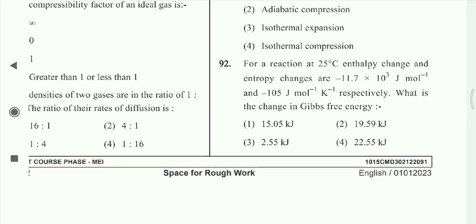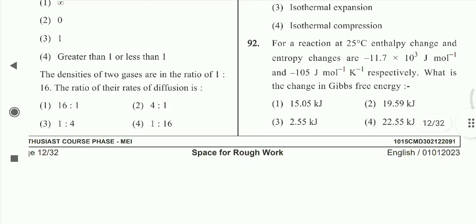Question 92: For a reaction at 92°C, the enthalpy change and entropy change are -11 kJ/mol and 11.7 × 10⁻³ kJ/mol/K respectively. The Gibbs free energy change is 19.59 kJ. Option 2nd is correct.